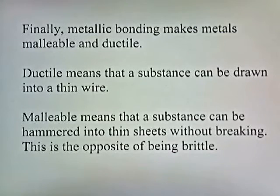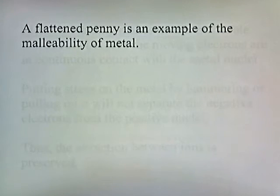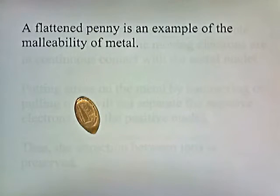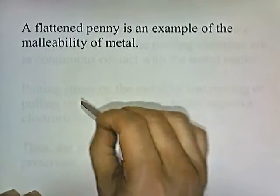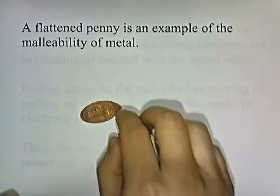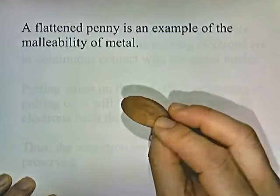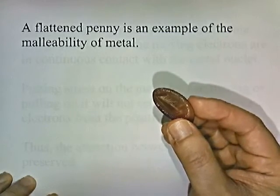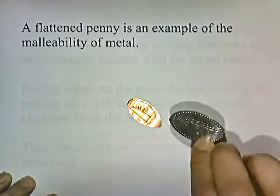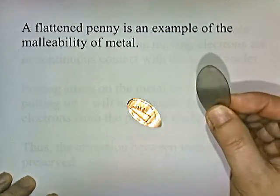Metallic bonding also makes metals malleable and ductile. When something is ductile, it means the substance can be drawn into a thin wire. Malleable means a substance can be hammered into thin sheets without breaking — the opposite of brittle. A flattened penny is an example of malleability. At amusement parks, a machine applies great pressure through rollers to flatten a penny. You can only do that with something malleable; if you put a salt crystal in the machine, it would break into a whole bunch of little pieces. A flattened quarter is another example — you can apply pressure and it just flattens out without cracking.